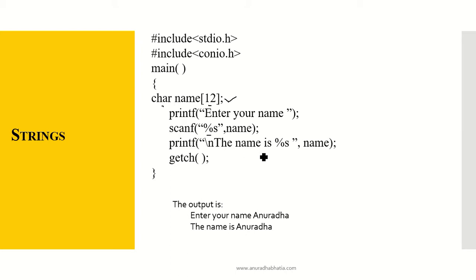And I print it as 'the name is %s name'. Getch is getting a character and close. Save this program and run it. My output is enter your name and I enter Anuradha. And the output is the name is Anuradha.